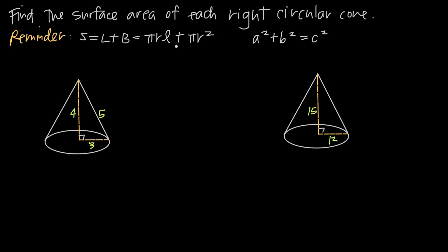We're going to be using this formula most often, and we want to go through a couple of examples. In this first example, we have a cone where the radius is 3, the height is 4, and the slant height is 5. So if we plug these values into our surface area formula, we get s = πrl: pi times the radius, which is 3, times l, the slant height.